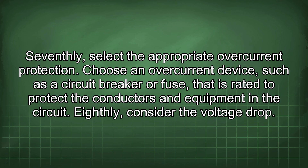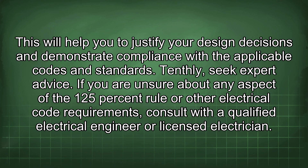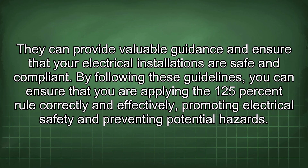Seventh, select the appropriate overcurrent protection — choose a circuit breaker or fuse rated to protect the conductors and equipment in the circuit. Eighth, consider the voltage drop and ensure conductors are sized adequately to minimize it, as voltage drop can affect equipment performance. Ninth, document your calculations; keep a record of your calculations and assumptions to justify design decisions and demonstrate code compliance. Tenth, seek expert advice — if unsure about any aspect of the 125% rule, consult with a qualified electrical engineer or licensed electrician who can provide valuable guidance and ensure your installations are safe and compliant.